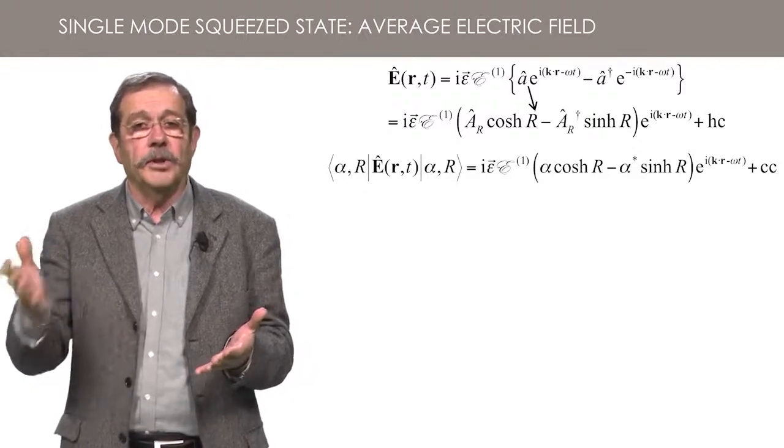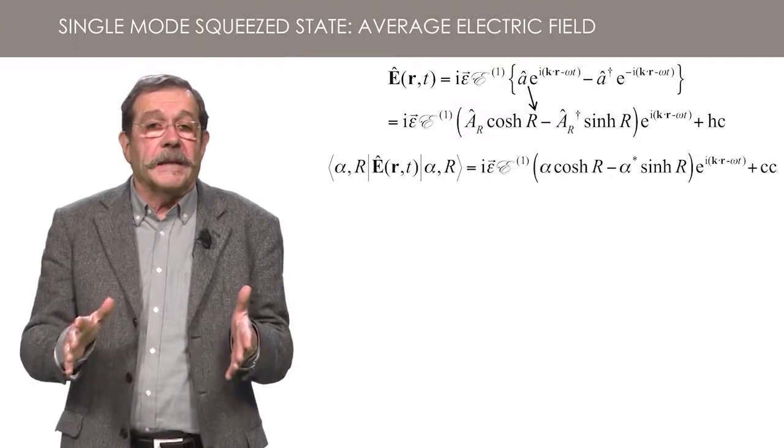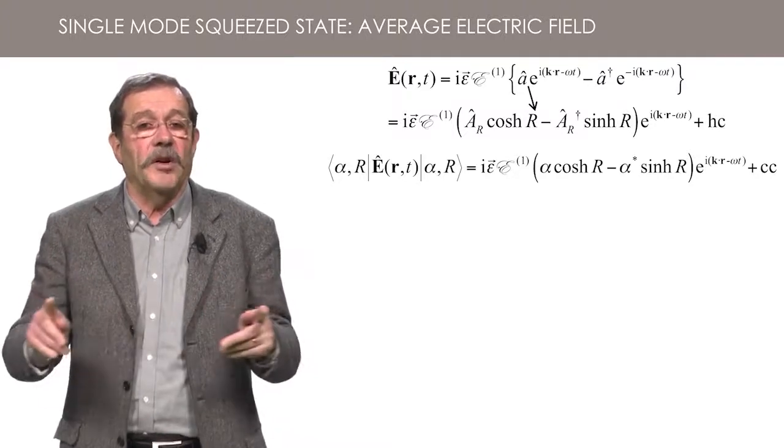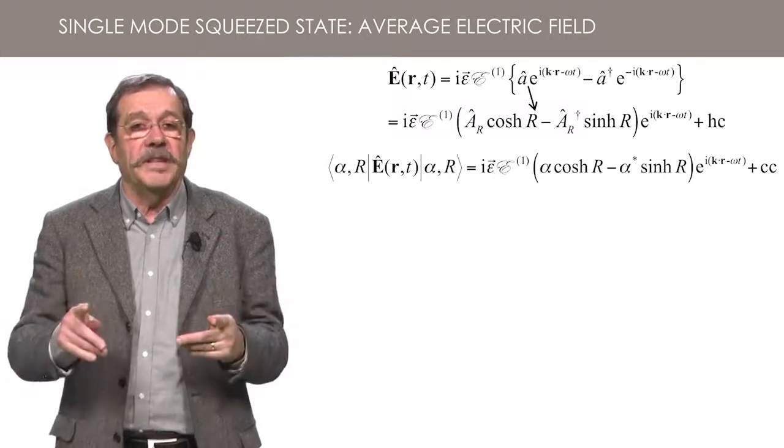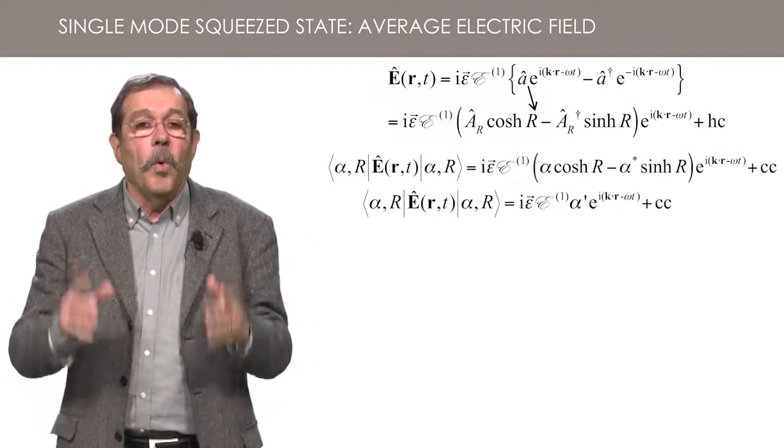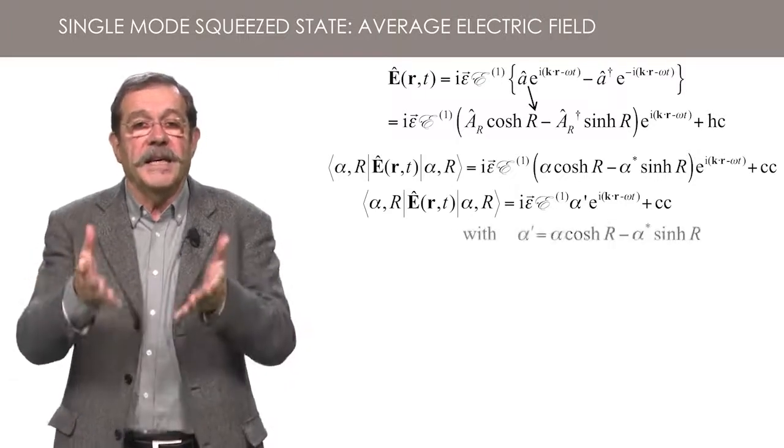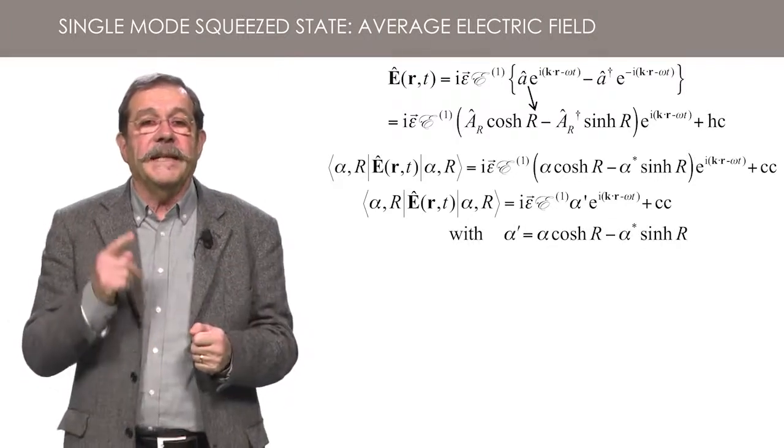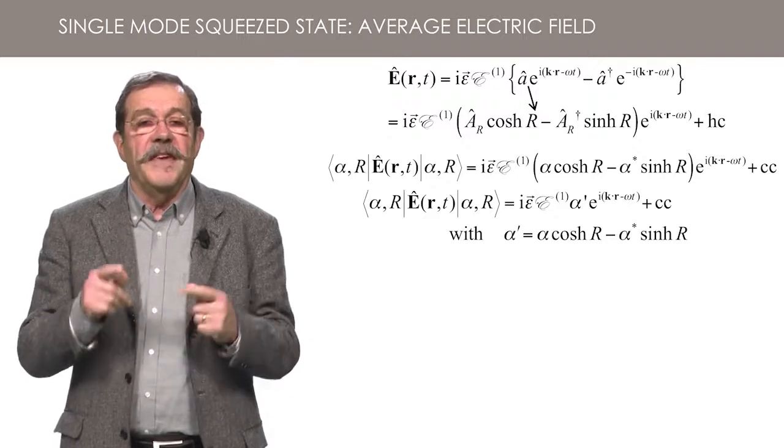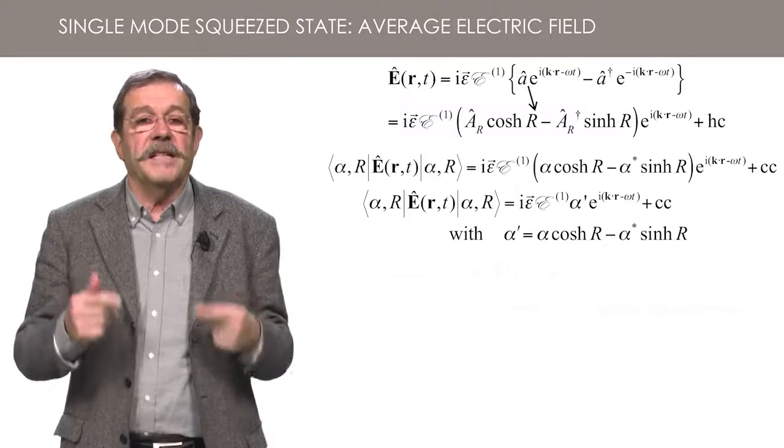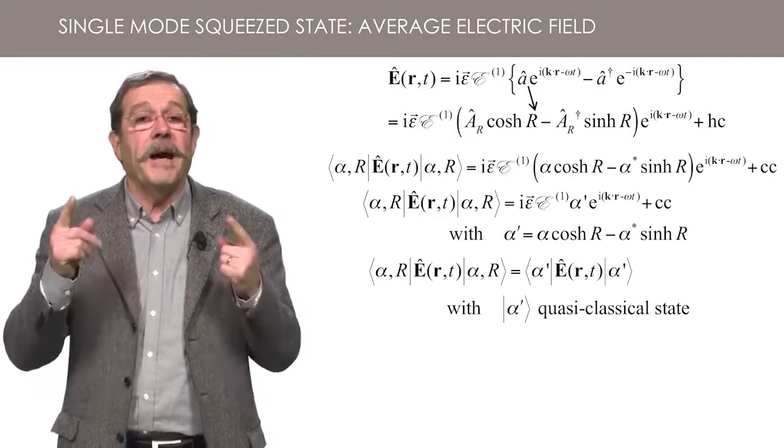Here, CC means complex conjugate. In fact, this is nothing else than the expression of a classical field with a complex amplitude alpha prime, whose expression as a function of alpha and R is here. It can also be considered the average field for a quasi-classical state characterized by the complex number alpha prime.